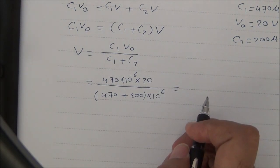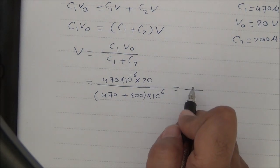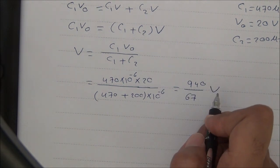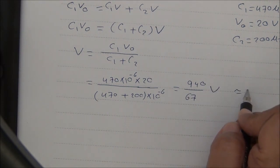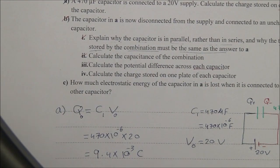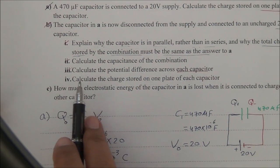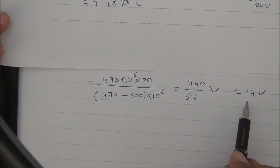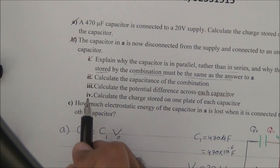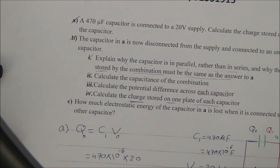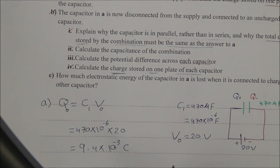Calculating: V = 9400 / 670 ≈ 14 V. So the potential difference across each capacitor after connection is approximately 14 volts.